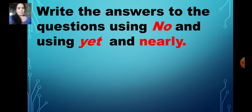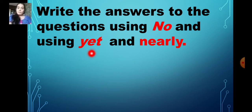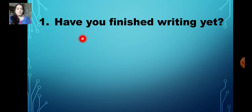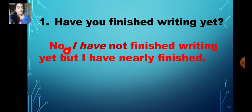Now let's move into the questions. Write the answers using 'no' — all answers should be negative statements — and using 'yet' and 'nearly.' So all your answers should be 'no,' and the words 'yet' and 'nearly' should be there. Number one: have you finished writing yet? The answer should begin with 'no.' No, I have not finished writing yet.